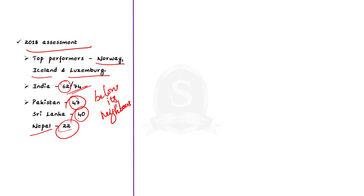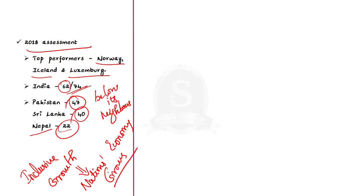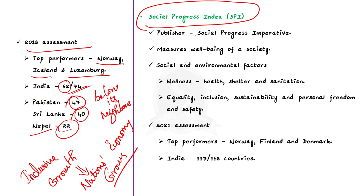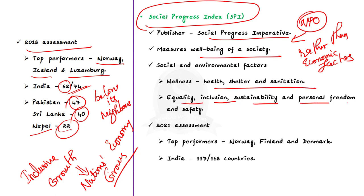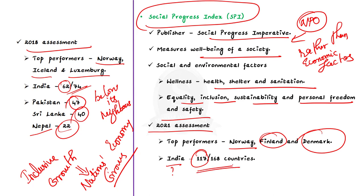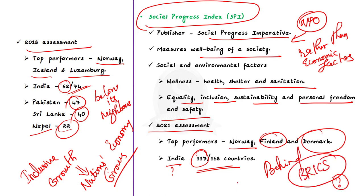By knowing this ranking, you would have understood why inclusive growth is very much important for a country. Only by creating inclusive growth can an economy grow at a huge level. Let me tell you one more index to measure inclusive growth — the Social Progress Index. This index is published by the non-profit organization Social Progress Imperative. The SPI measures the well-being of a society by observing social and environmental outcomes directly rather than economic factors. These include wellness such as health, shelter, and sanitation; then equality, inclusion, sustainability, and personal freedom and safety. In the recent 2021 assessment, Norway topped the index followed by Finland and Denmark. India has been ranked 117 among 168 countries, which is much behind the BRICS nations.